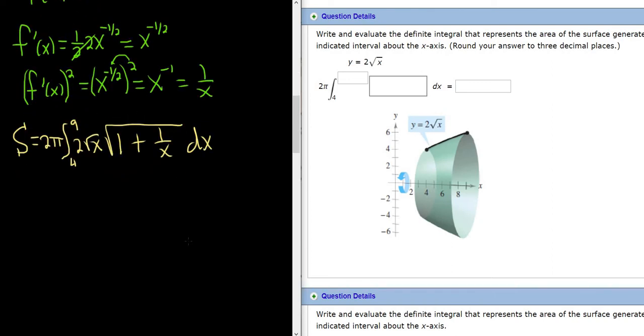So this integral might look intimidating, but it's actually not too bad. So this is equal to, let's pull out this 2. So we have 4 pi, definite integral from 4 to 9. And we can actually distribute this x. x times 1 is x, and x times 1 over x is just 1. Then we have our square root and our dx.